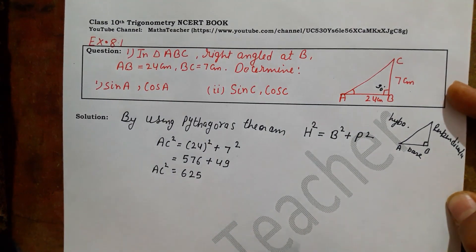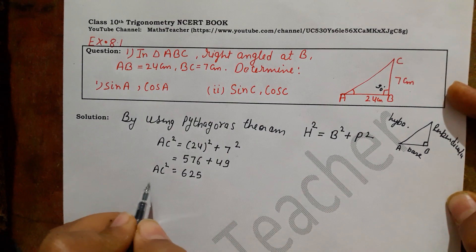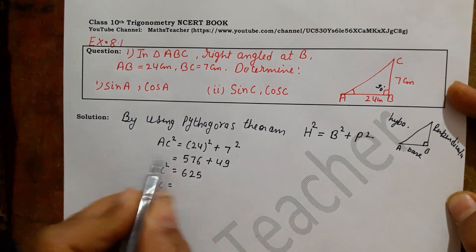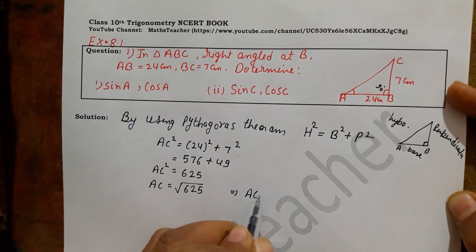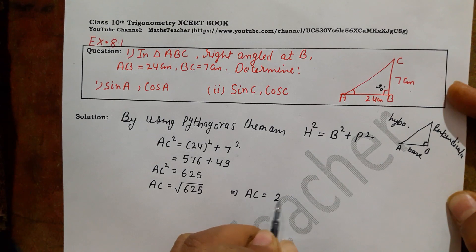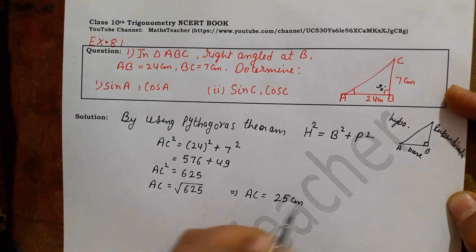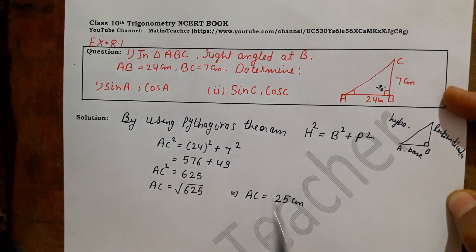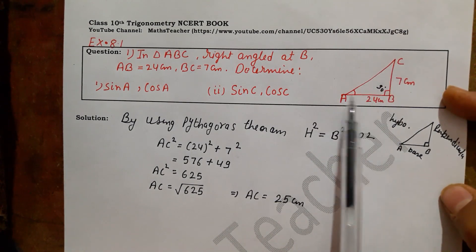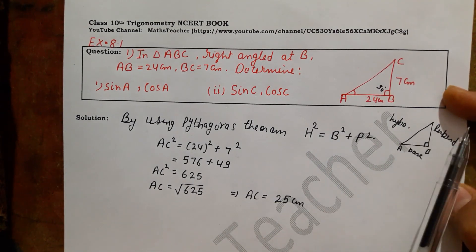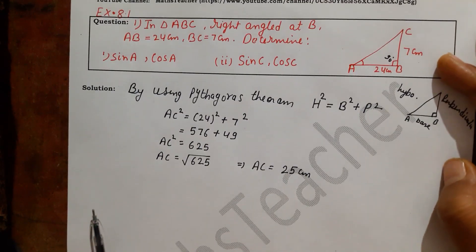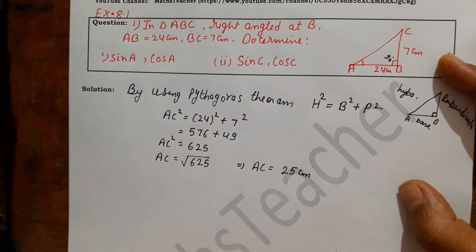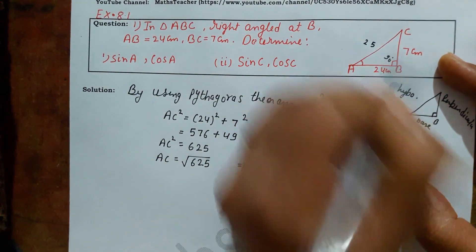AC squared equals 24 squared plus 7 squared, which is 576 plus 49 equals 625. So AC squared is 625, and taking the square root gives AC equals 25. When a value comes out of a square root it is plus or minus, but since AC is a length it cannot be negative, so we take only the positive value. AC is 25 cm.